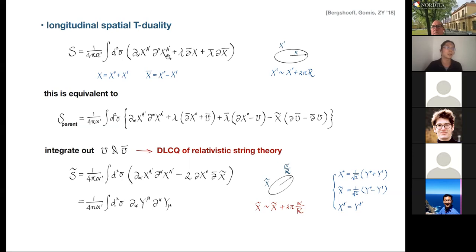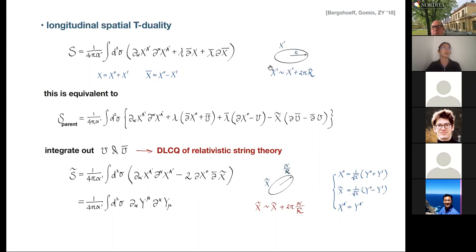There are different T-duality transformations to consider. Performing T-duality in the transverse sector is quite trivial — very similar to the relativistic case, giving the same type of Buscher rules — so I won't discuss that in detail. It's more interesting to perform T-duality along the compactified x^1 circle. This is a canonical transformation: introduce a generating function with a Lagrange multiplier x-tilde. Integrating that out and applying Poincaré lemma for v and v-bar gives back the original action.